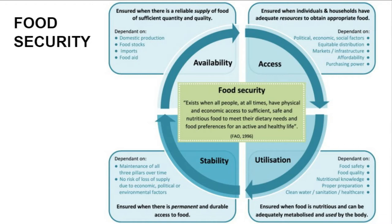Availability is dependent on domestic production, food stocks, imports, and foreign aid. Access is when individuals and households have adequate resources to obtain the available food, meaning equitable distribution of food supply among everyone. The third aspect is utilization, meaning that food is nutritious and can be adequately mobilized and used by the body. Finally, there must be stability, meaning permanent and durable access to food during all seasons.